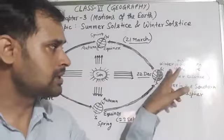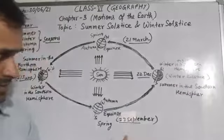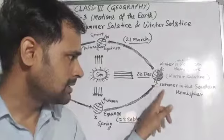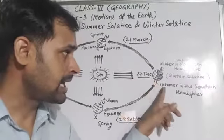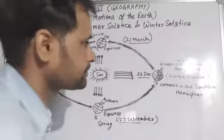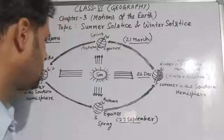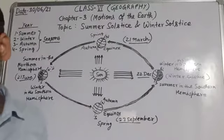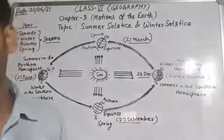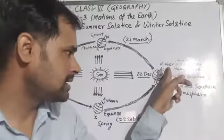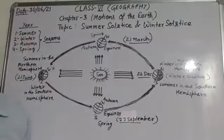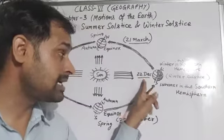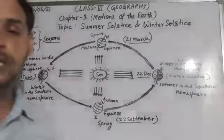The opposite condition will be there — Winter in the Northern Hemisphere. Always remember that on 22nd December, the Southern Hemisphere is tilted towards the Sun. The whole area gets heat and sunlight, so Summer will be there in the Southern Hemisphere. Longer days and shorter nights will be there, and the reverse will happen in the Northern Hemisphere — there will be Winter season. This position of the Earth is called Winter Solstice. So on 22nd December there is Winter Solstice, and on 21st June there is Summer Solstice.